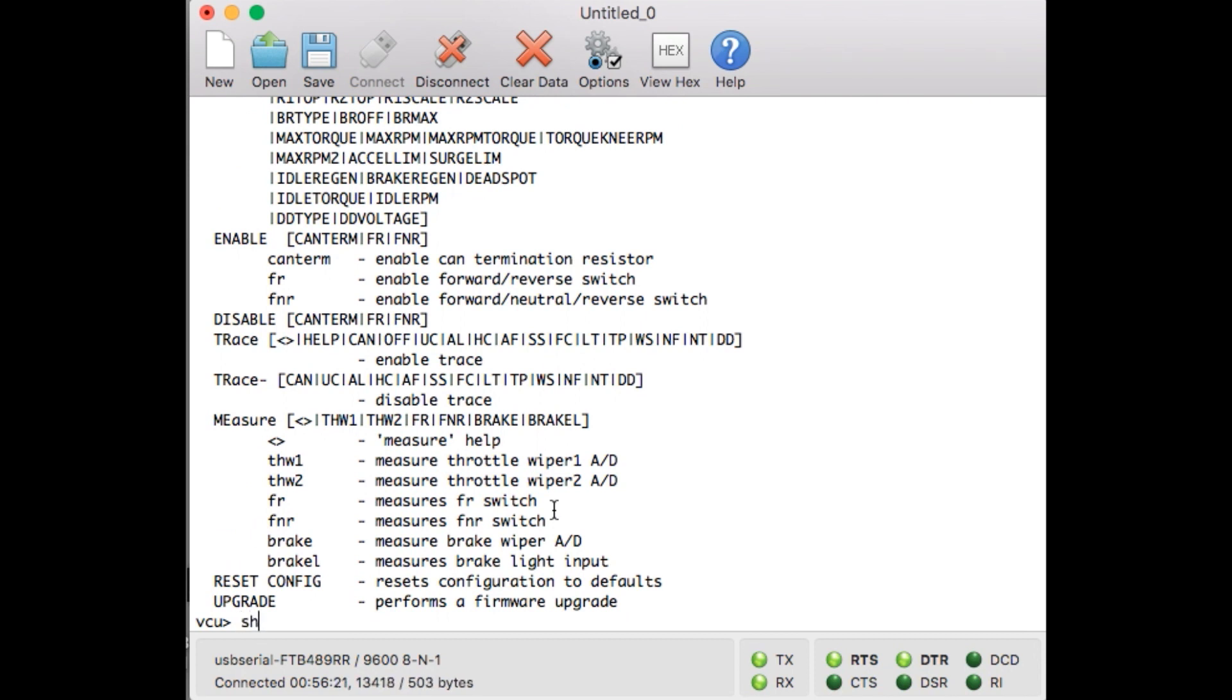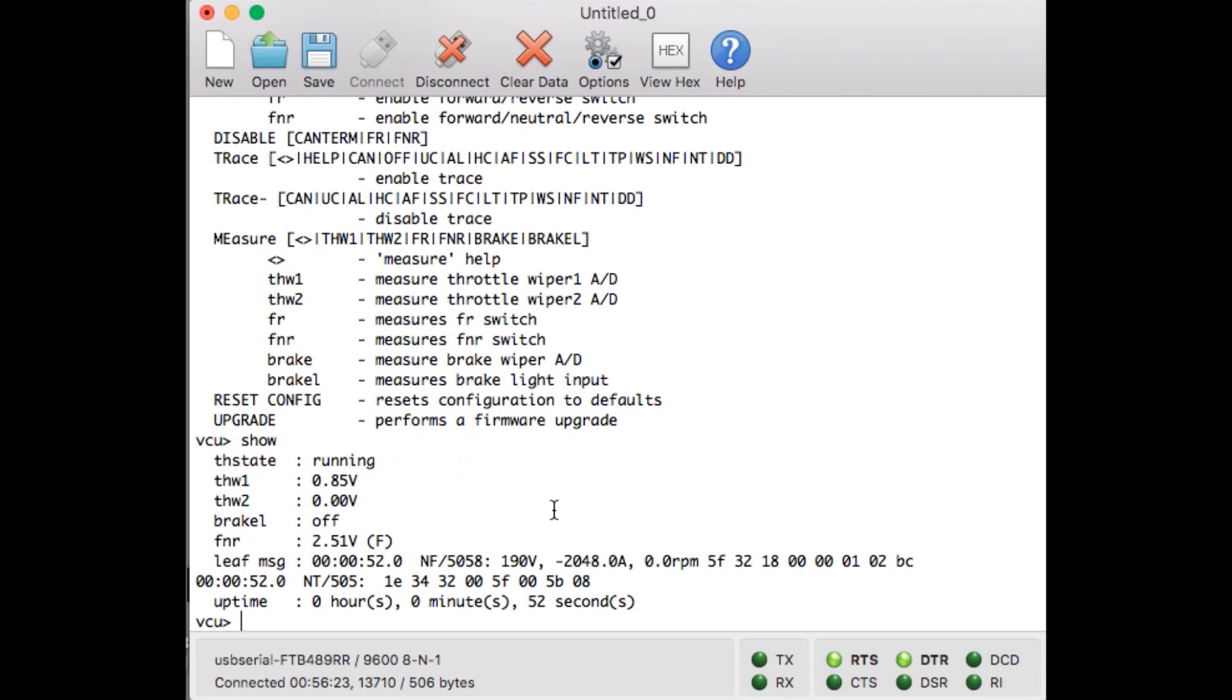Let's say I just type in show, it kind of shows me the basics, it's up and running, it shows me the minimum and maximum voltage for my throttle, some other information like that, it's set in the forward mode right now on the forward neutral reverse switch.